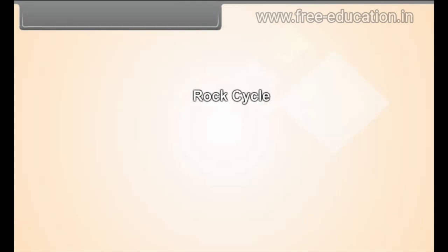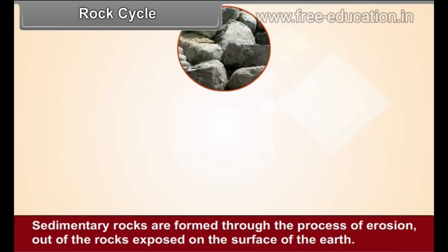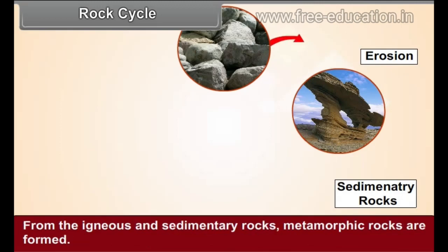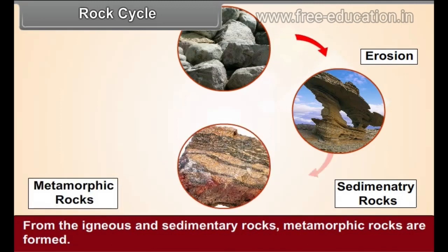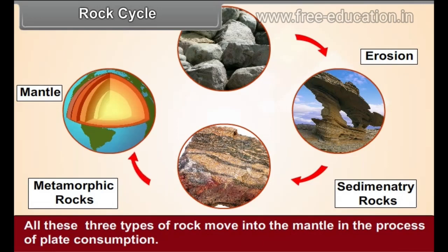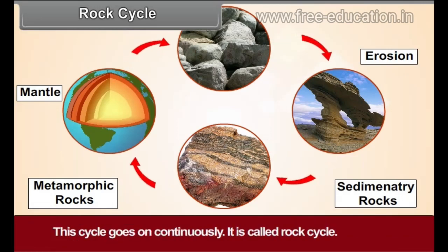Rock Cycle: Sedimentary rocks are formed through the processes of erosion out of the rocks exposed on the surface of the earth. From the igneous and sedimentary rocks, metamorphic rocks are formed. All these three types of rock move into the mantle in the process of plate consumption. They come to the surface again in the form of primary igneous rocks. This cycle goes on continuously — it is called the rock cycle.